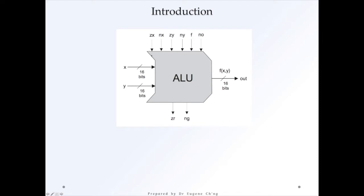There are various inputs — you've got the data inputs. In this case, the ALU is a 16-bit Arithmetic Logical Unit, and so you've got the two numbers coming in: the 16-bit digits X and Y coming in as data. But the ALU also receives instructions — 6 instruction sets — which allows us to combine various Boolean operations in order to operate on the X and Y values, giving an output.